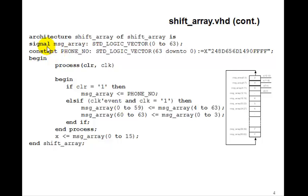So we'll define a signal message_array 0 to 63. That's going to contain the entire message. And to write the message, we'll just make a constant called phone_number, standard logic vector 63 down to 0, and this will be 248, D is going to display a dash, 656 dash, 1490, and then 4 blanks, FFFF. So this hex number will be the message which will contain 64-bit, 63 down to 0.